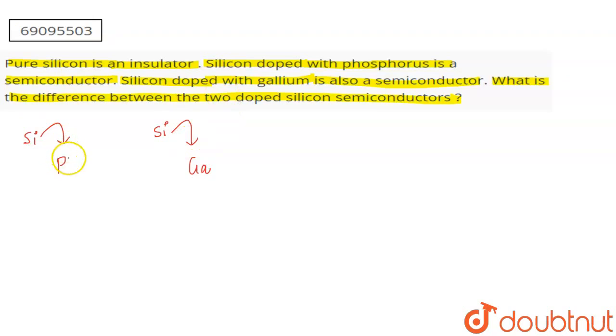Phosphorus is a pentavalent impurity. In this case, the semiconductor is called an n-type semiconductor. Gallium is a trivalent impurity. In this case, the semiconductor is called a p-type semiconductor.